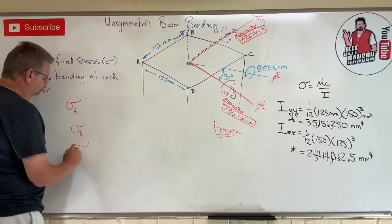The negative values mean compressive stress and the positive values mean tensile stress. Wow — a one-dollar pool noodle from the dollar store really helps visualize what's going on in this problem. I hope that helps you. I'll see you on the next video.